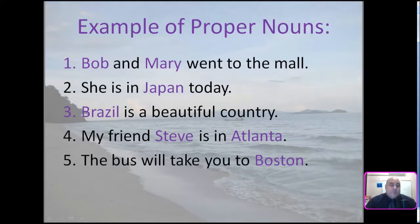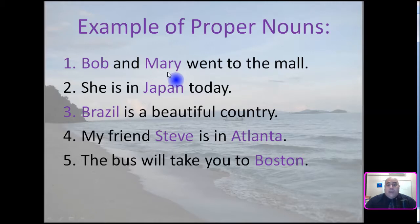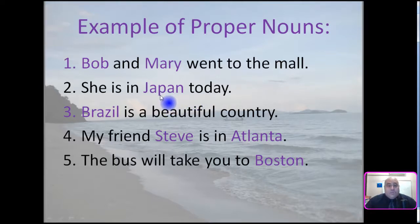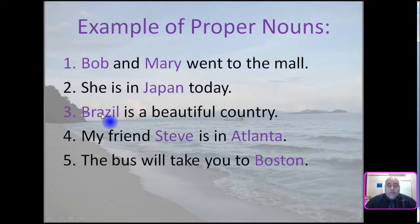Examples of proper nouns in sentences. Number one: Bob and Mary went to the mall — Bob and Mary are proper nouns. Number two: She is in Japan today — Japan is a proper noun. Number three: Brazil is a beautiful country — Brazil is a proper noun.